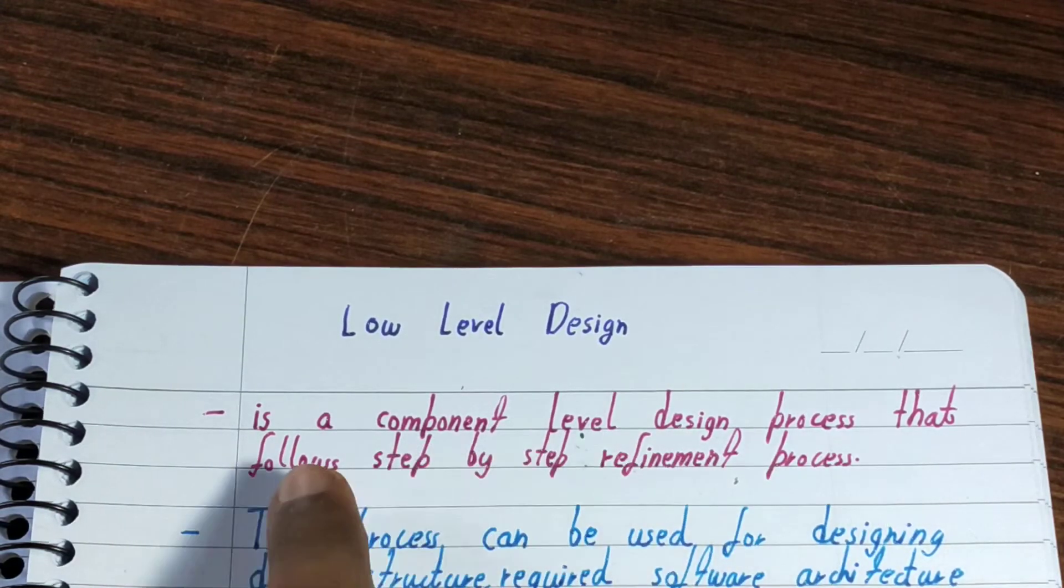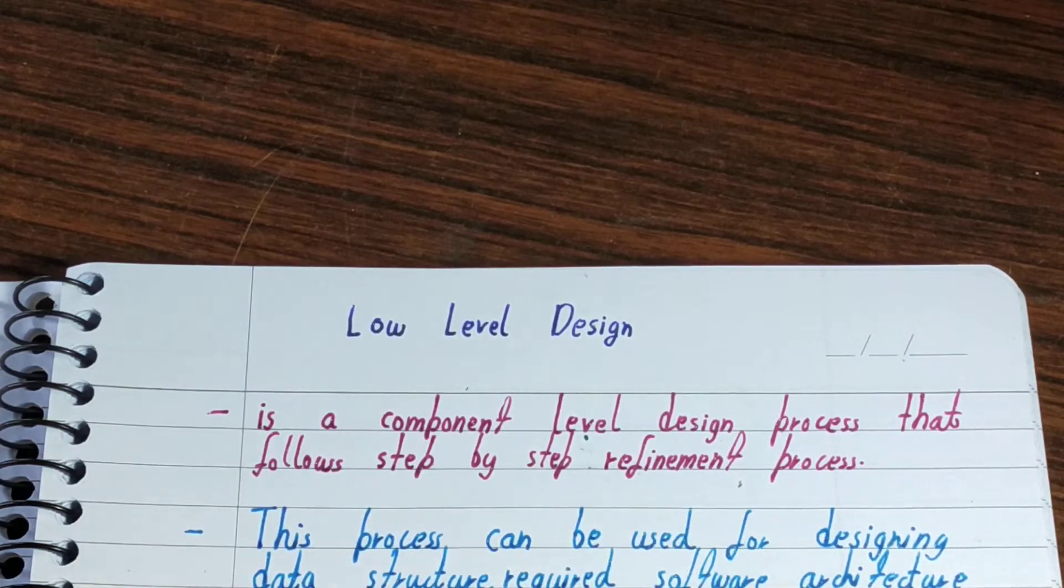It follows a step-by-step defining process. In low level design, what we do is work on each of the components separately and try to develop them separately, maybe in parallel also. That is the advantage of low level design. We try to completely work on each of the components before we start with the high level design.